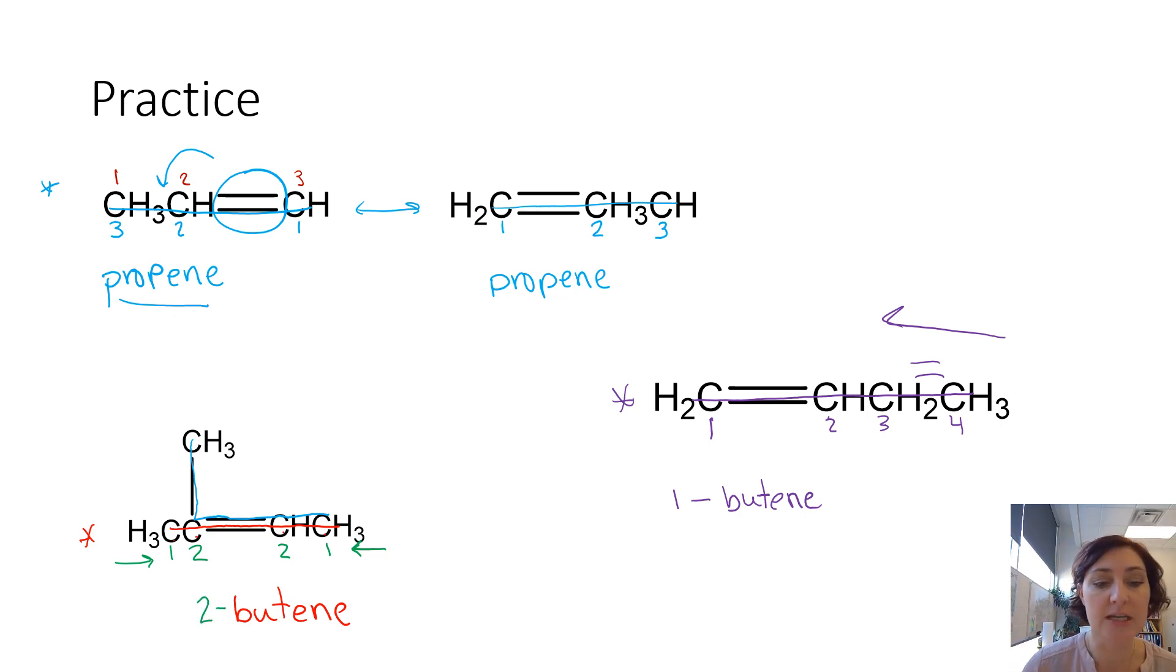So no matter what, this is going to be 2-butene. But the question is, can I number that? Since both directions are equal, can I pick a direction that gives my branch the lowest number possible? And if I count from left to right, that means that this methyl group is on carbon number two. If I count from right to left, that means my methyl group is on carbon number three. So the correct way to count this is first to worry about that double bond, get it in the lowest possible carbon, then worry about getting your branches in the lowest number possible. So we're going to follow this green counting left to right so that we have it in position two.